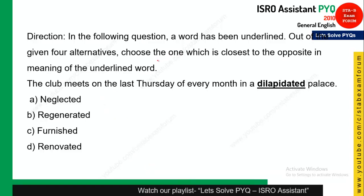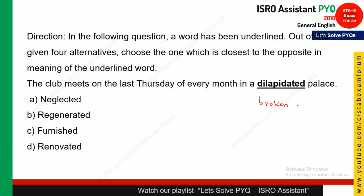The first question asks you to choose the word closest to the opposite meaning of the underlined word. The underlined word is 'dilapidated' — 'The club meets on the last Thursday of every month in a dilapidated palace.' The meaning of dilapidated is broken down. The opposite of broken down is renovated, so option D is the most appropriate one, and the correct answer is option D.